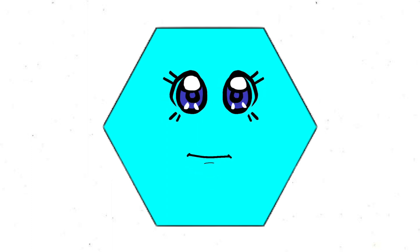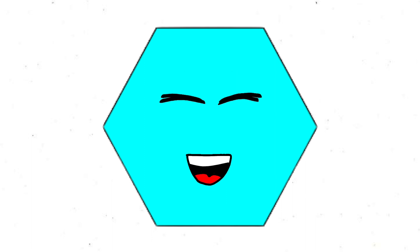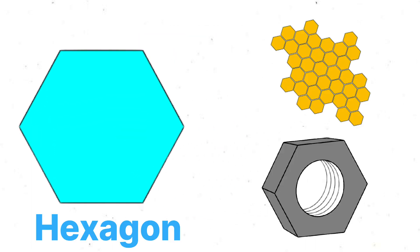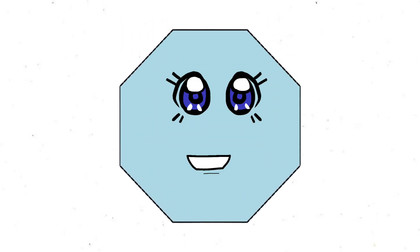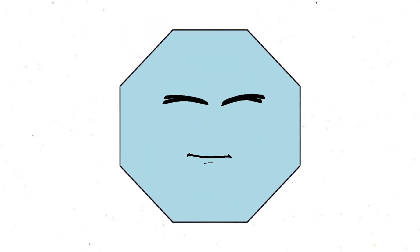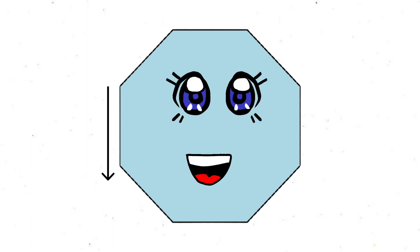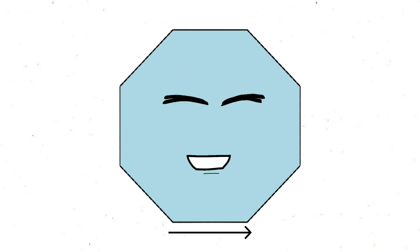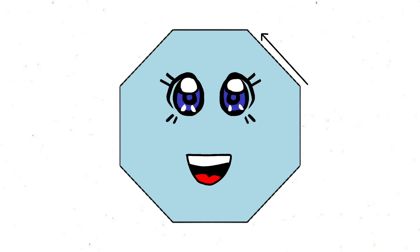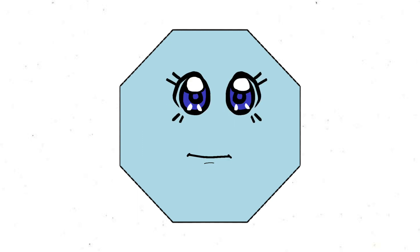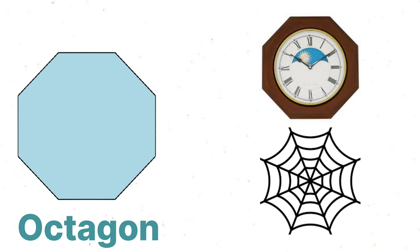I am a Hexagon and I have six sides: one, two, three, four, five, six. The example of hexagon is honeycomb and bolt. I am an Octagon and I have eight sides: one, two, three, four, five, six, seven, eight. The example of octagon is wall clock and spider web.